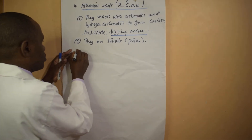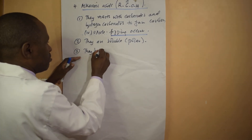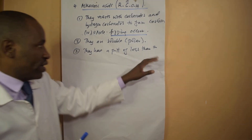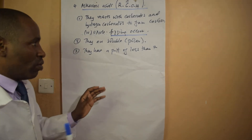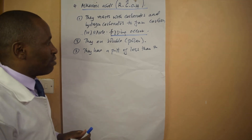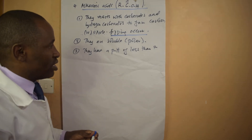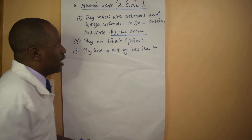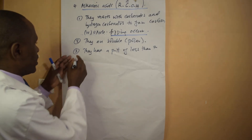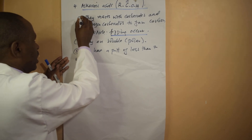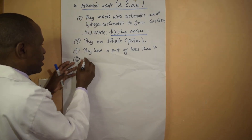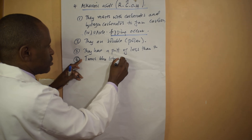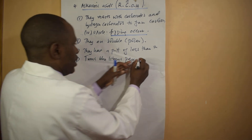Alkanoic acids have a pH of less than seven. Most alkanoic acids are weak acids with a pH of about four to six, though some may have a pH as low as two or three. Indicators such as litmus paper can be used — blue litmus paper turns red in the presence of alkanoic acids.